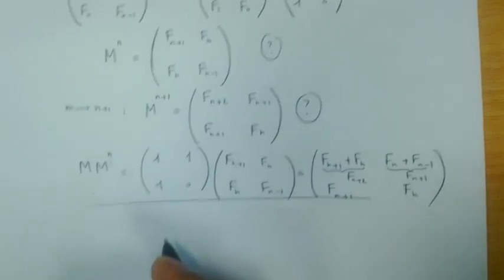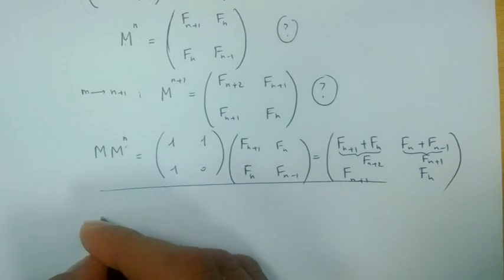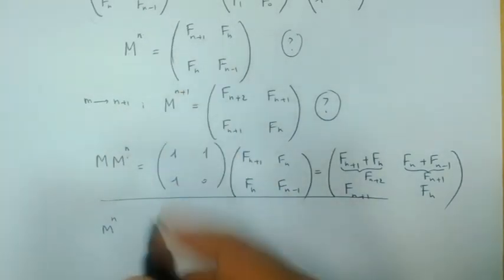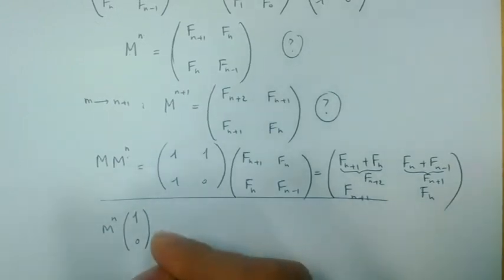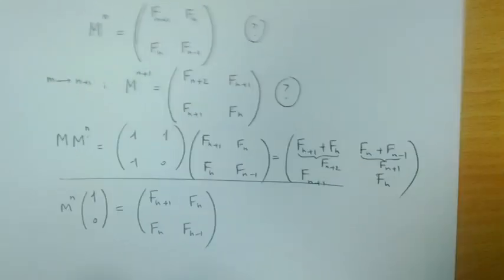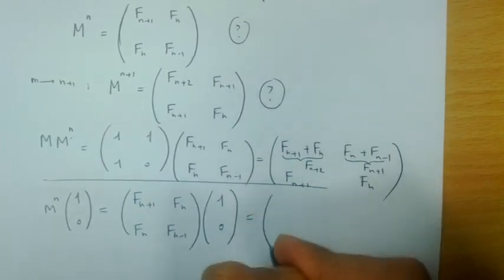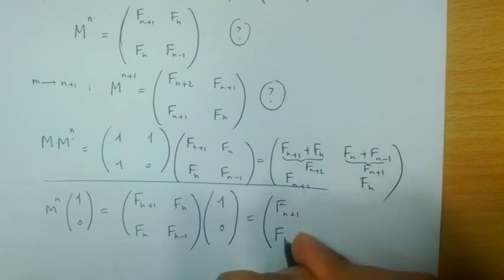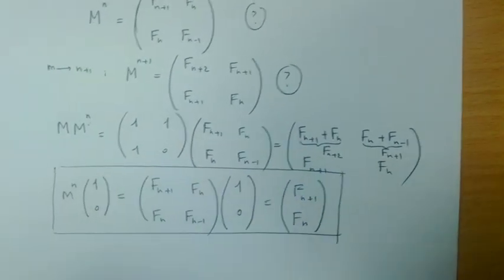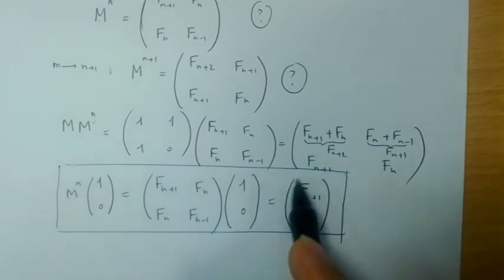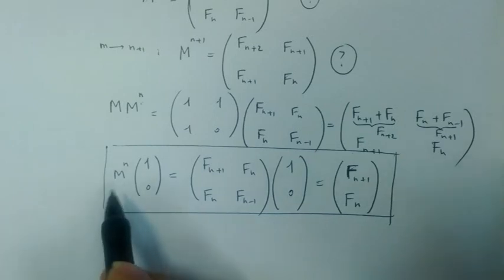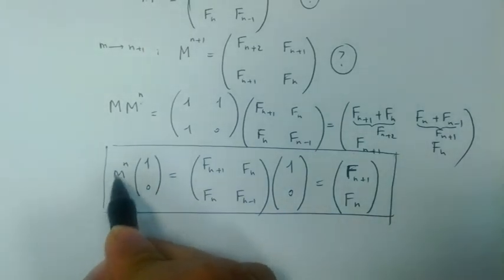I'll use this fact and now consider this simple equation. If I multiply M^n, which is this matrix, by the vector [1, 0], what I'll have is f(n+1), f(n), f(n), f(n-1) times [1, 0], which gives simply f(n+1) and f(n). So this will be my basic equation, and I'll use it to find the explicit formula for f(n). The problem now is to calculate the nth power of M, which was defined as [1, 1; 1, 0].